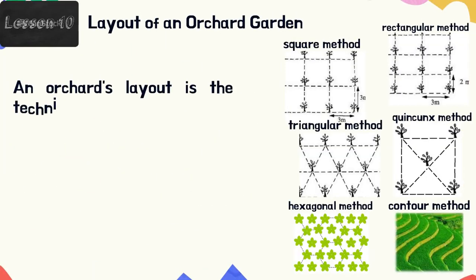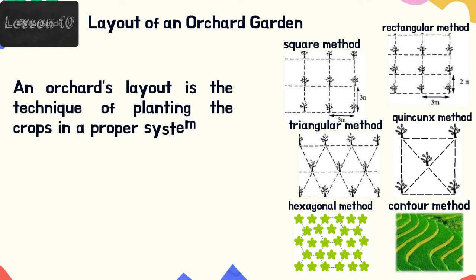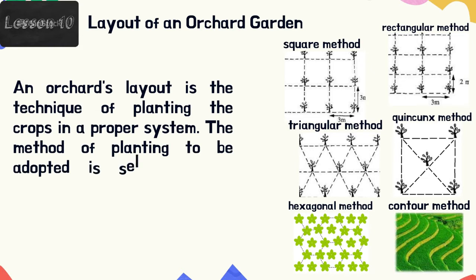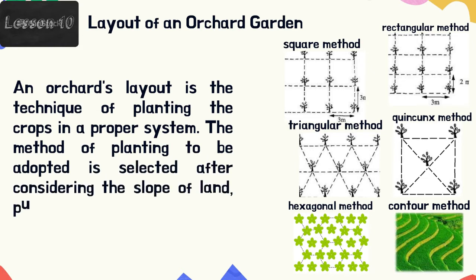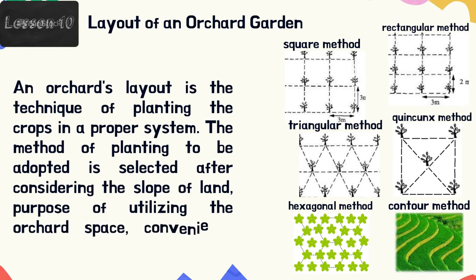Layout of an orchard garden. An orchard's layout is the technique of planting crops in a proper system. The method of planting to be adopted is selected after considering the slope of land, purpose of utilizing the orchard space, convenience, etc. There are six methods of planting recommended for fruit-bearing trees: square method, rectangular method, triangular method, quincunx method, hexagonal method, and contour method.